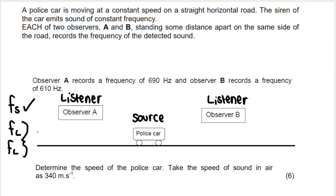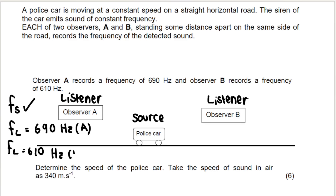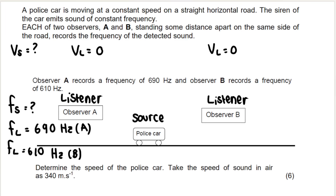This is a clear giveaway that you need to use simultaneous equations. Observer A records a frequency of 690 hertz — that is the frequency of listener A. Observer B records a frequency of 610 hertz — that is frequency of listener B. They do not tell you the frequency of the source, so that's an unknown. We know that both listeners are stationary, so the velocity of each listener is zero.